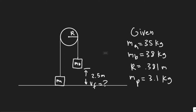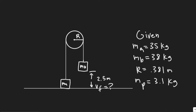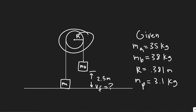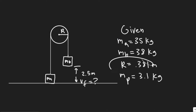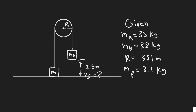The first thing you always want to do is draw what's going on. So we have two blocks MA and MB connected by this pulley. The pulley is frictionless, and we're given the masses of each block, the radius of our pulley, and the mass of the pulley. Block MB sits 2.5 meters above the ground.